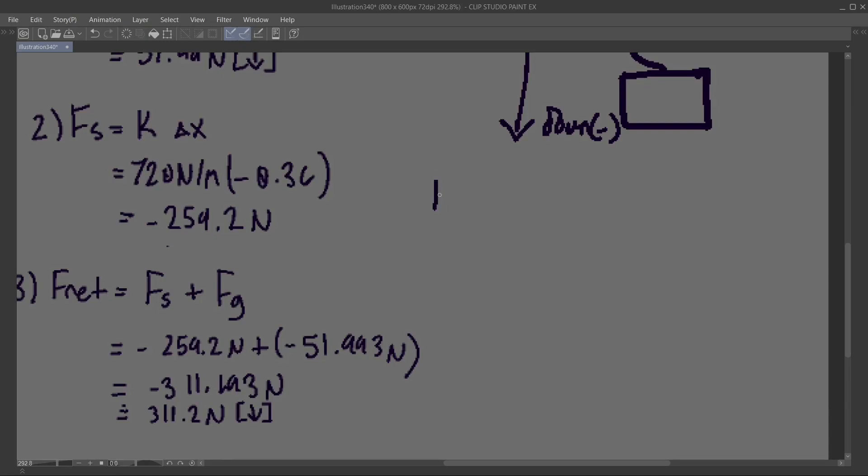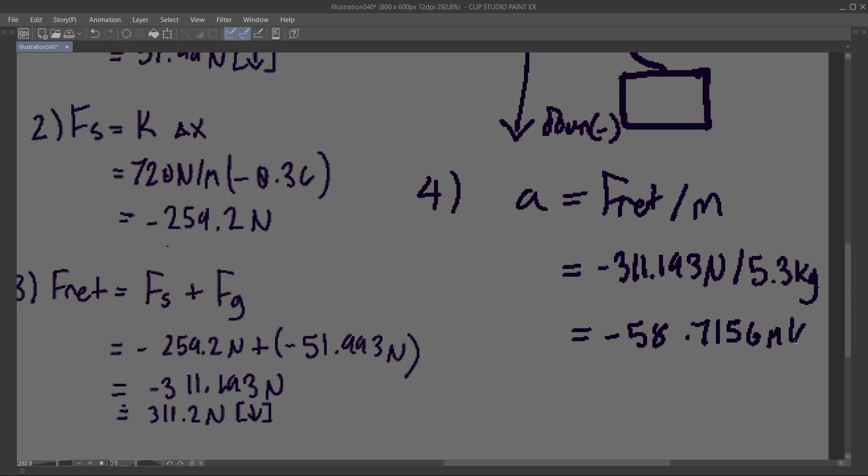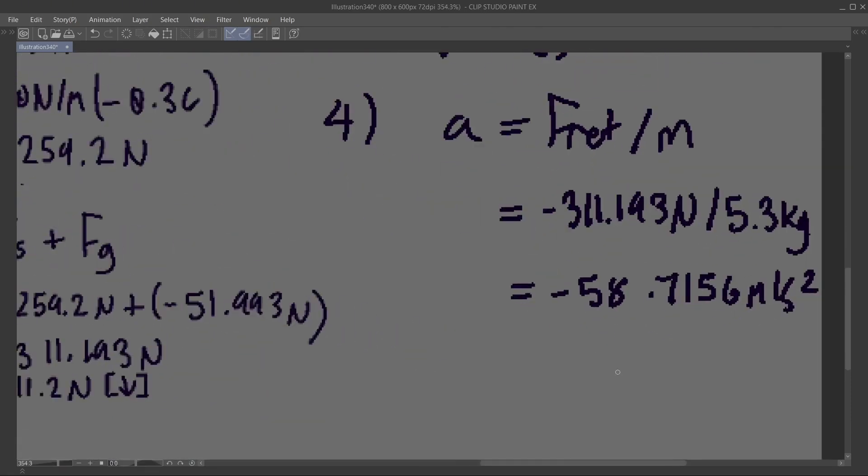And the last thing the question asks us is to calculate the acceleration of the system. Acceleration is equal to F net divided by the mass, which is negative 311.193 newtons divided by 5.3 kilograms, which gives us negative 58.7156 meters per second squared, which is approximately 58.72 meters per second squared down.